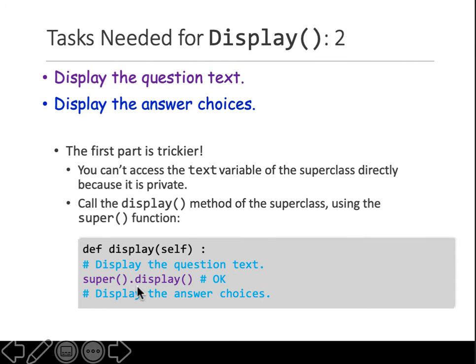Why do we call the display function of the parent class? Because we're just reusing the code. In that function we're just printing the text of the question anyways, so we don't need to rewrite that here in this class. We're using that function that's already been written - code reuse.